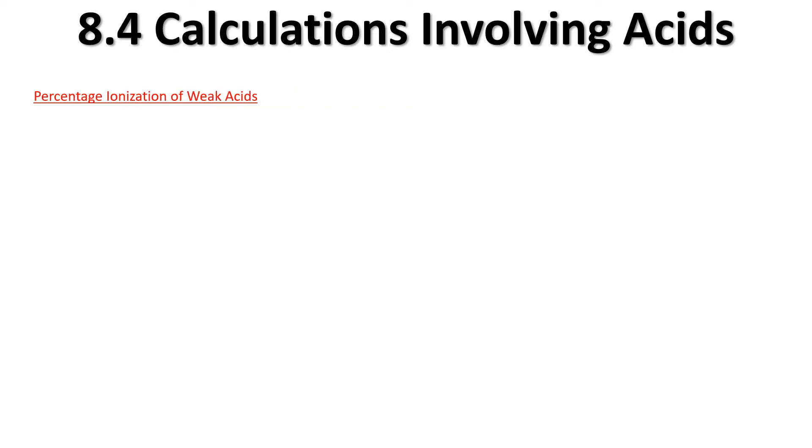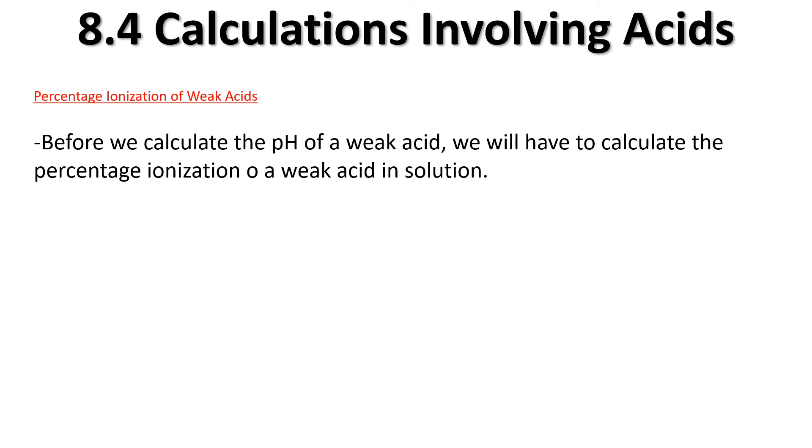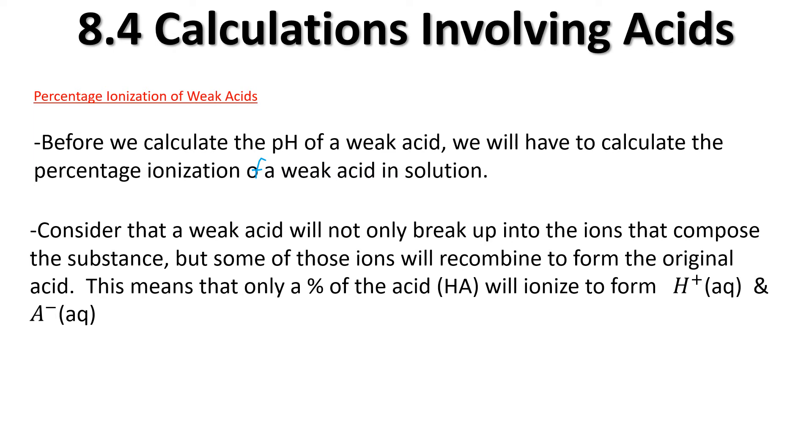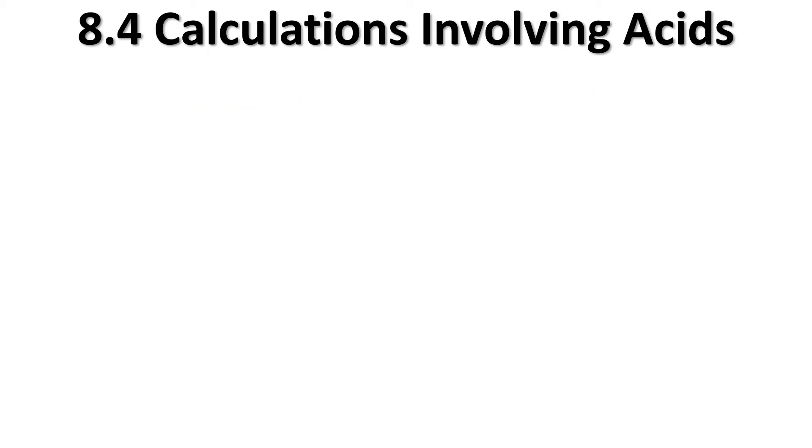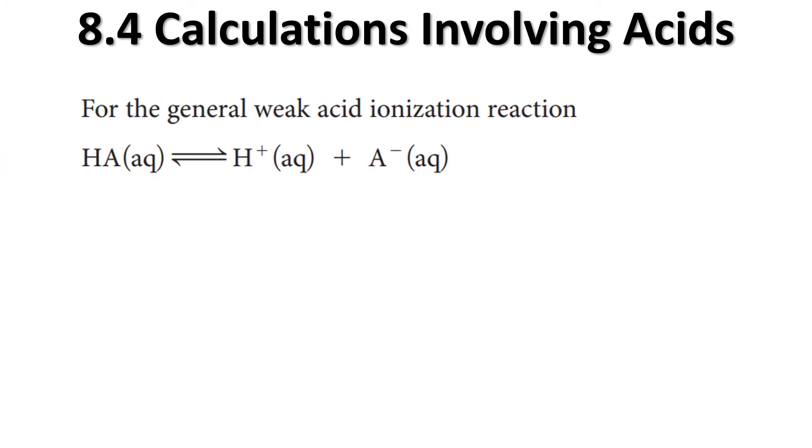Let's look at some percentage ionization of weak acids. Before we calculate the pH of a weak acid, we have to calculate the percent ionization of a weak acid in solution. We need to do this because the weak acid will not only break up into its ions that compose the substance, but some of those ions will recombine to form the original acid. We're only getting a percentage of these things breaking up here.